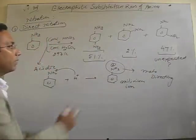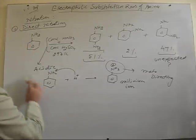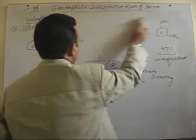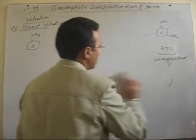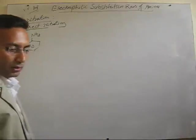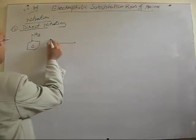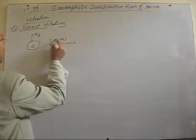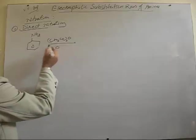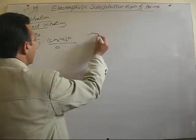So, this is explanation why a meta product is formed. Now, in order to get normal ortho and para products, we have to first acetylate aniline, just like we have done in the case of bromination.